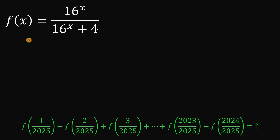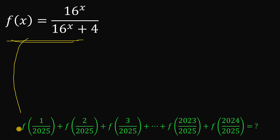Given this function f of x equals 16 raised to the power of x over 16 raised to the power of x plus 4, our goal is to evaluate the expression f of 1 over 2025 plus f of 2 over 2025 all the way down to f of 2024 over 2025.